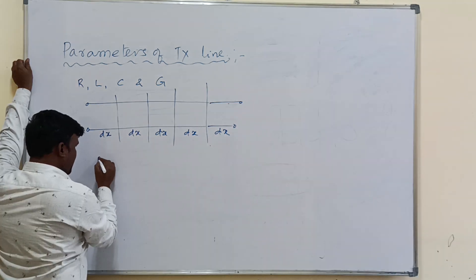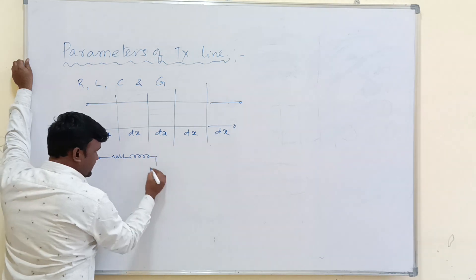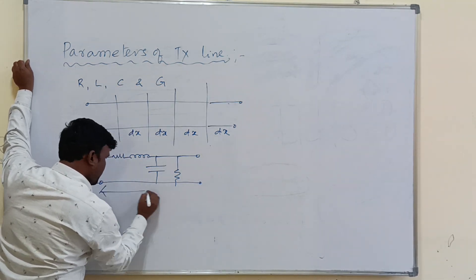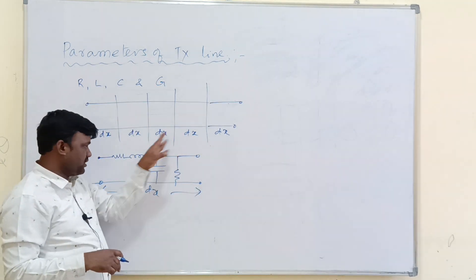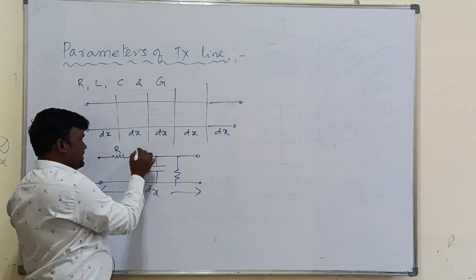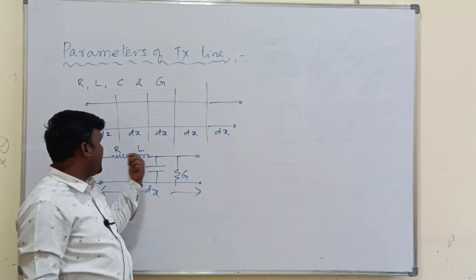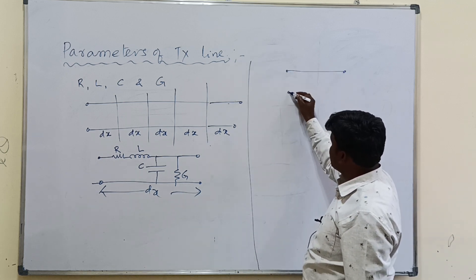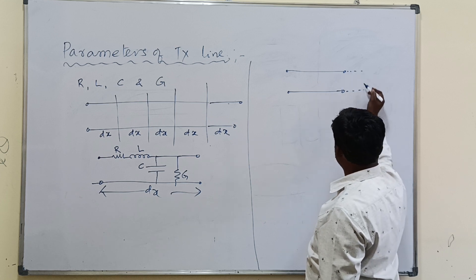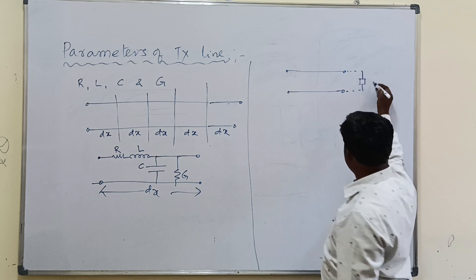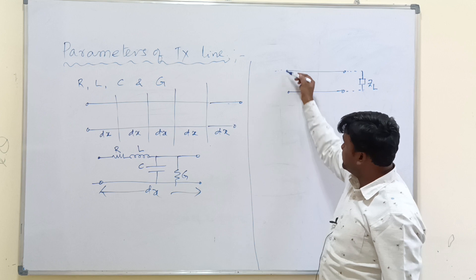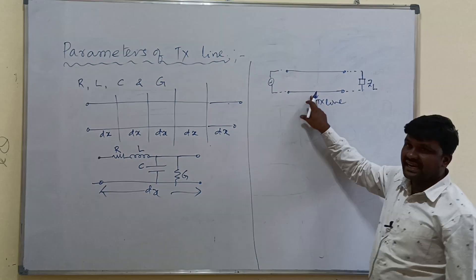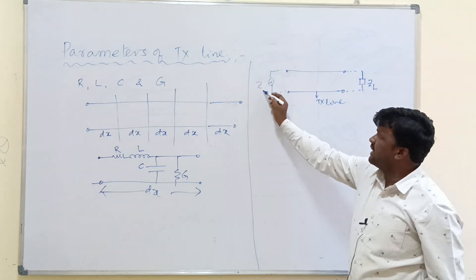Let's take the total length X equal to L, and divide it into parts of length DX. That means it is divided into five parts, each consisting of R, L, C, and G uniformly distributed. Each part of the transmission line of length DX contains these elements. This transmission line is used to connect the source and load, where the load has impedance ZL and the source has impedance ZS.